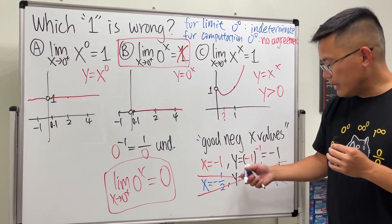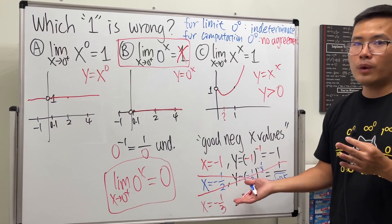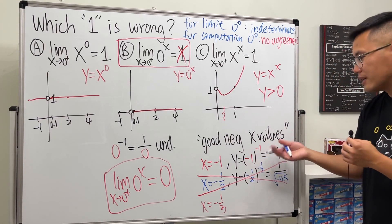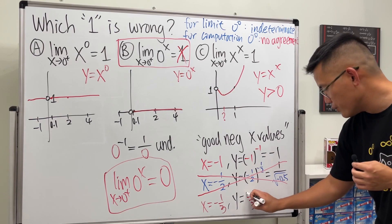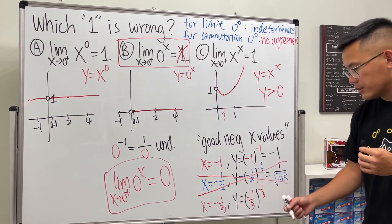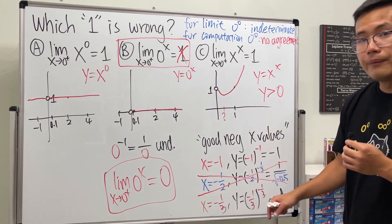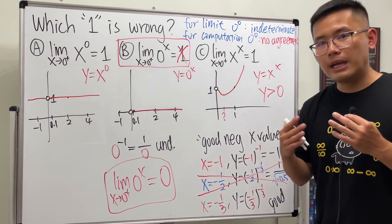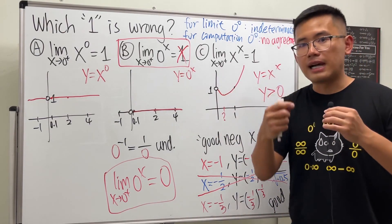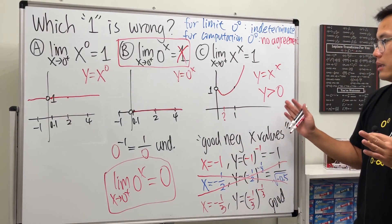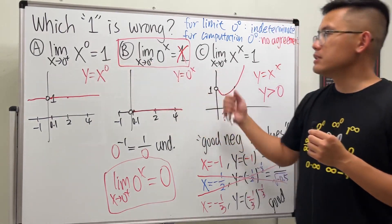But x = -1/3 is once again a good negative x value. You get (-1/3)^(-1/3), which is real and negative. Similarly, x = -2 also gives a valid output. So you can plug in various good negative values and get scattered dots — the left-hand side is not continuous but gives an idea of how the function behaves.